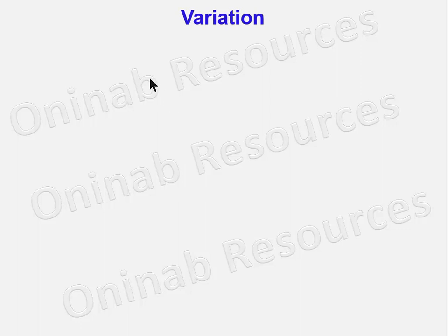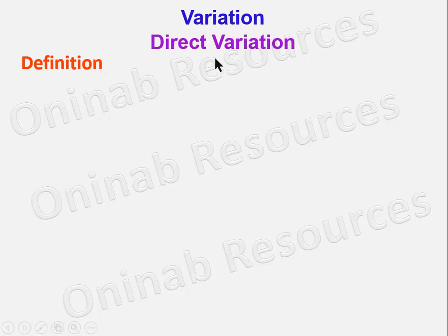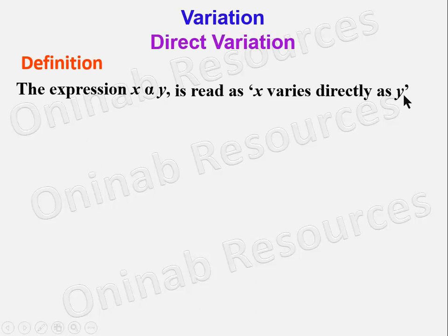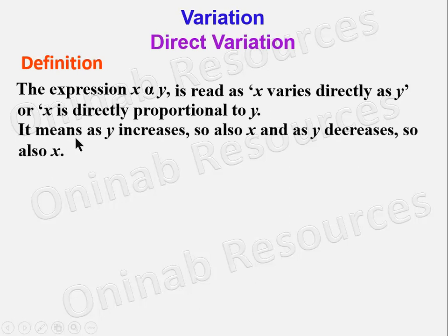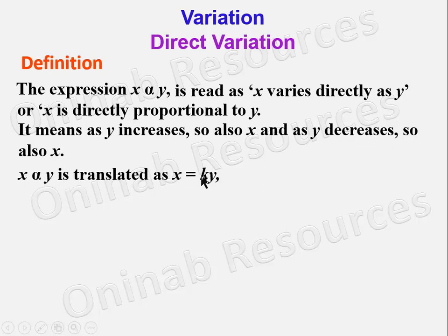Hello out there, welcome to this tutorial on variation. In this video we'll be looking at direct variation. The expression X α Y, where α is the symbol of variation, is read as X varies directly as Y, or X is directly proportional to Y. It means as Y increases, so also X, and as Y decreases, so also X.